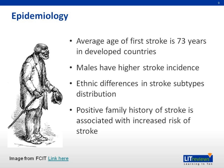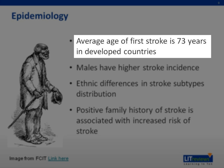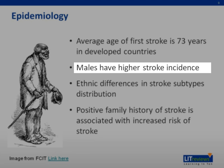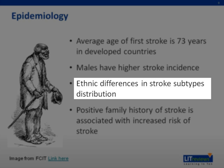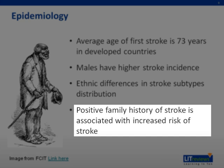We next move on to the epidemiology of stroke. This slide covers the non-modifiable risk factors. As one gets older, the risk of stroke increases. In demographically developed countries, the average age of stroke onset is 73 years, though it might be younger in less developed countries. Stroke risk doubles for each decade after age 55. Males have a slightly higher stroke incidence compared to females. Race is a non-modifiable risk factor, with certain ethnicities predisposed to certain types of stroke — for example, small vessel arterial strokes are more common among Asians, and hypertensive bleeds are more common among Africans compared to Caucasians. A positive family history of stroke is also associated with increased risk, and some stroke subtypes are from genetic disorders, for example, CADASIL.